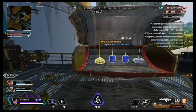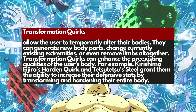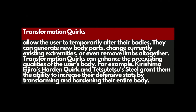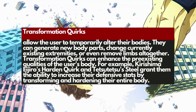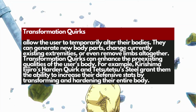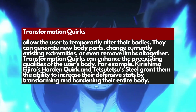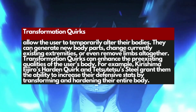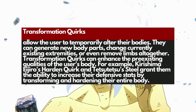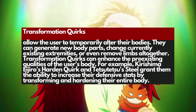The next quirk type is Transformation. What is a Transformation quirk? Think of Colossus from X-Men — when he turns into Colossus he turns all metal. It's basically the same thing here. Transformation quirks allow the user to temporarily alter their physiology, making you harder, making you more liquid, making you hard as a rock.